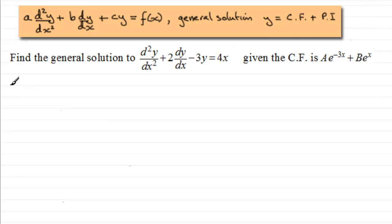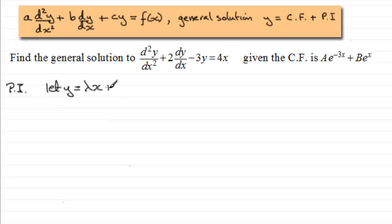Let's start by finding a particular integral. When finding a particular integral for linear functions, we say let y equal some constant — let's say lambda — multiplied by x, plus another constant which I'm going to call mu. Obviously it's up to you what constants you use, but I don't want to use a and b. We then find dy/dx and d²y/dx².